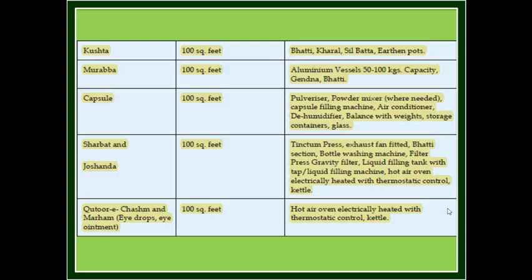Category 7: Sharbat and Lohanda. Space required: 100 square feet. Recommended equipment: filter press, exhaust fan, bhatti, water washing machine, filter press, gravity press, liquid filling tank, etc. Category 8: Eye drops and oil elements. Space required: 100 square feet. Recommended equipment: hot air oven electrically heated with thermostatic control, kettle, etc.